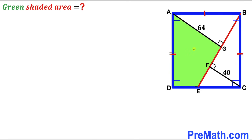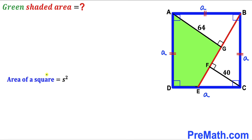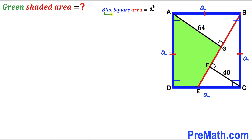Let's focus on this blue square ABCD. I'm going to label the side length of this blue square as lowercase a, so all side lengths are lowercase a as well. Recalling the area of a square formula: area equals s², where s is the side length. In our case the side length is a, so the area of this blue square is a².